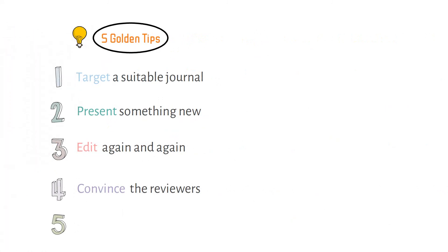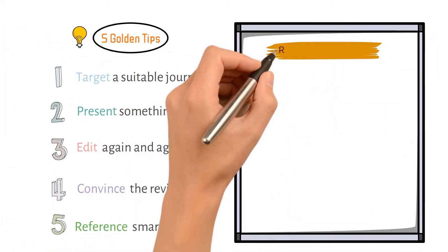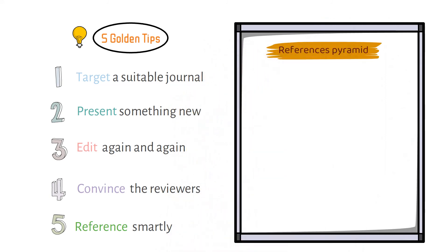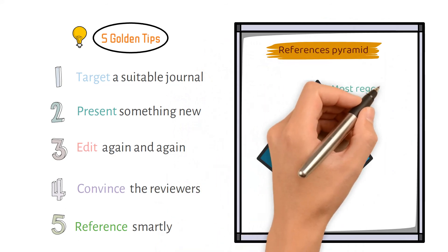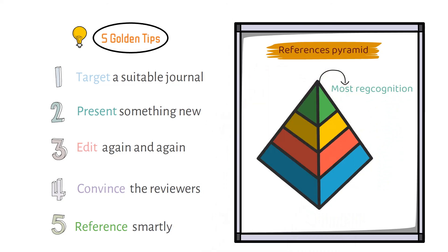Well, this is the last tip which is reference smartly. What does it mean? Let's take a look at this reference pyramid. Here, what you need to do is to cite the articles that receive the most recognition on that specific topic of your field. By doing that, your manuscript will gain credibility.